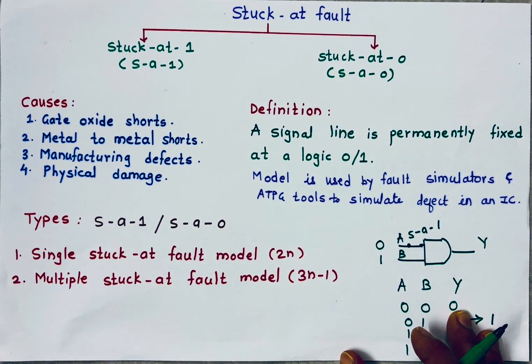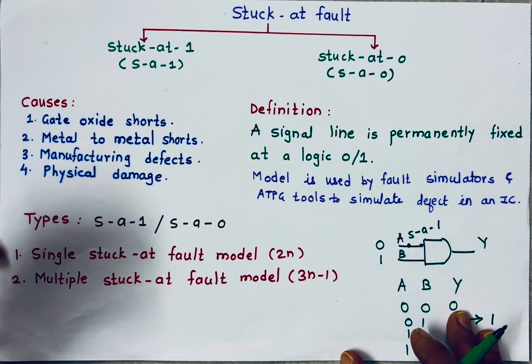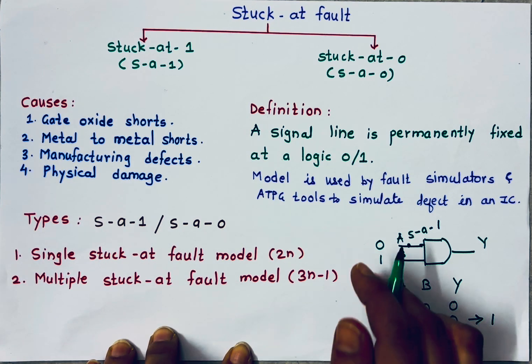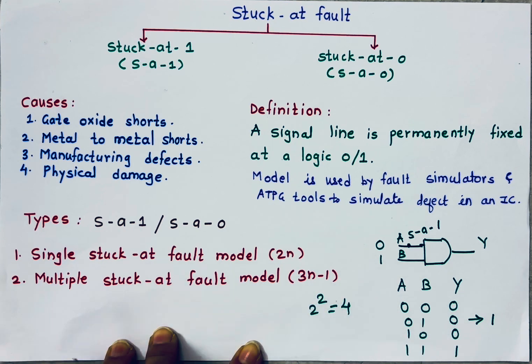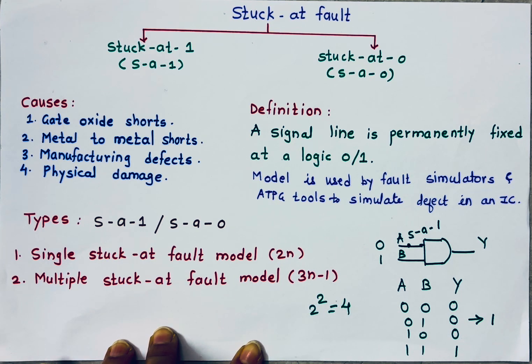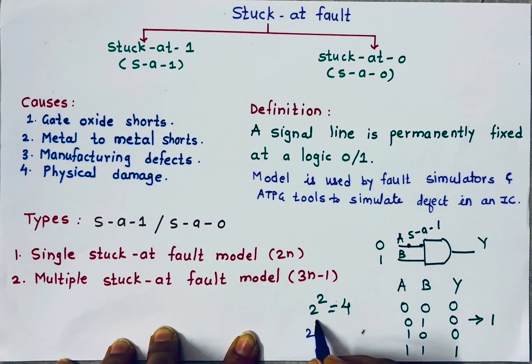But as the complexity increases, when number of inputs increases, here number of inputs are 2. So number of test vectors are 2 raised to 2, that is 4. When number of inputs are 4, let's say my circuit has 4 inputs, then 2 raised to 4, that is 16. 16 test vectors will have to apply.